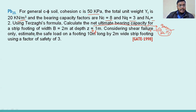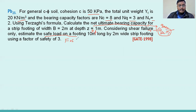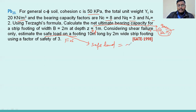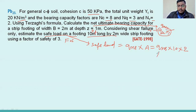Next, estimate the safe load on a footing 10 meters long by 2 meters wide using a factor of safety of 3. We have to calculate the safe load. Safe load means we have to calculate q_ns into area, where the area is 10 into 2. For calculating q_ns, we need q_nu divided by factor of safety.